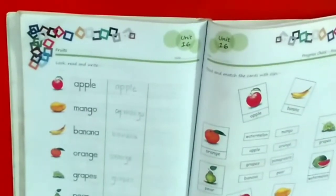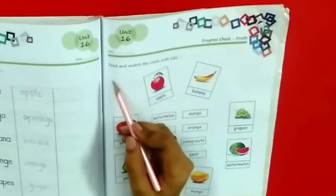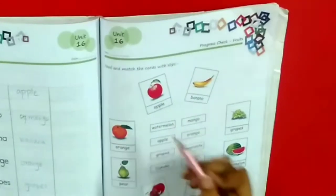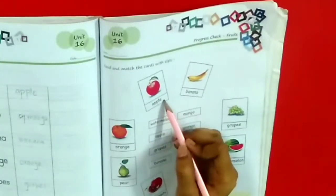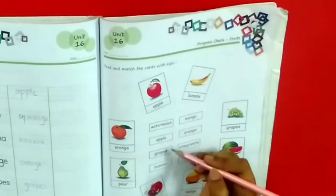Then page number 53, Unit 16, Progress Check. The question is: read and match the cards with slips. These are the cards and these are the slips. Fruit names here. Here we have the fruits. We have to write the slips here and match them.